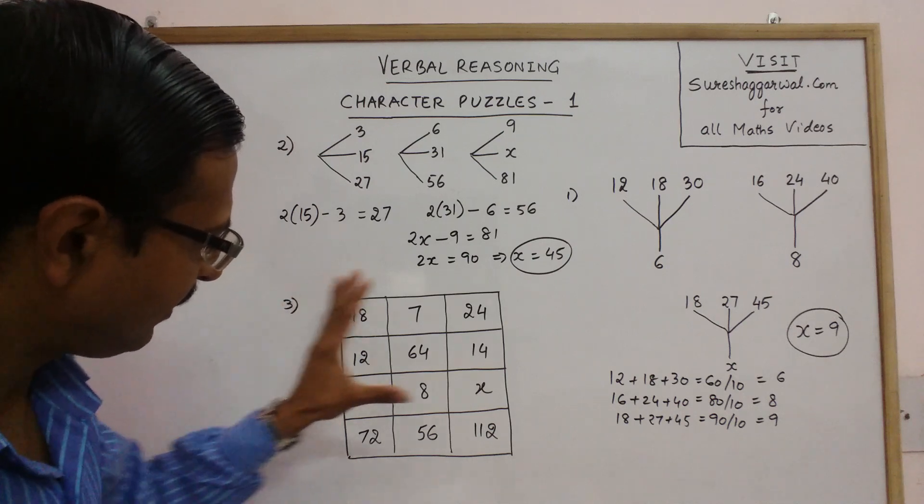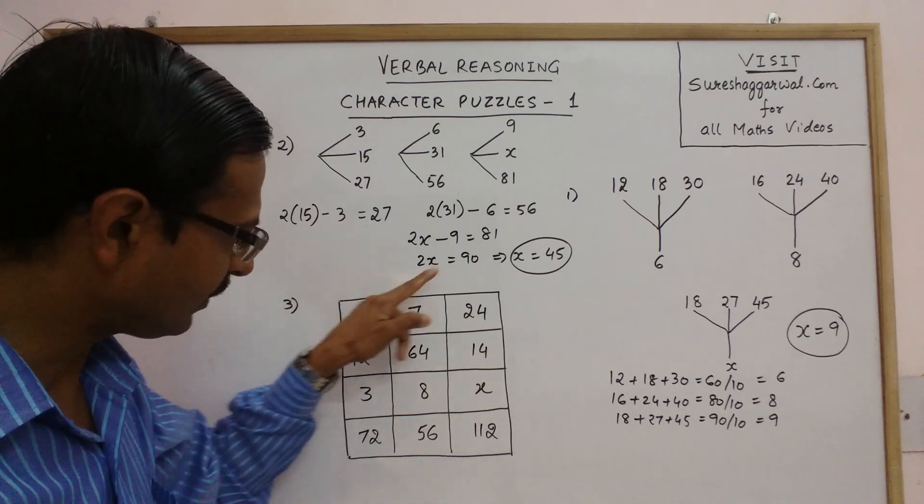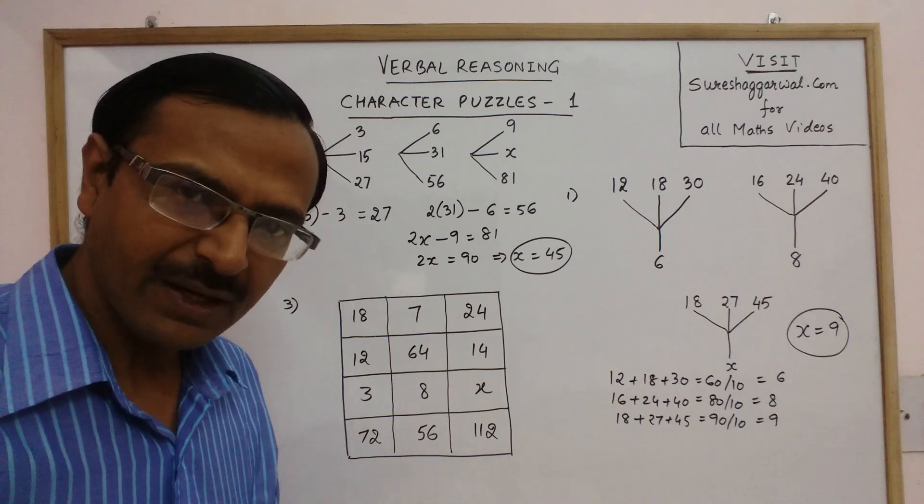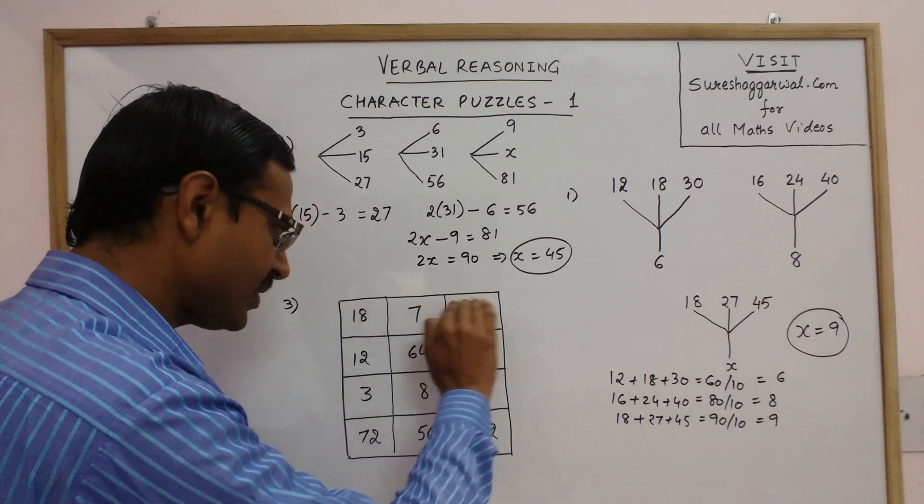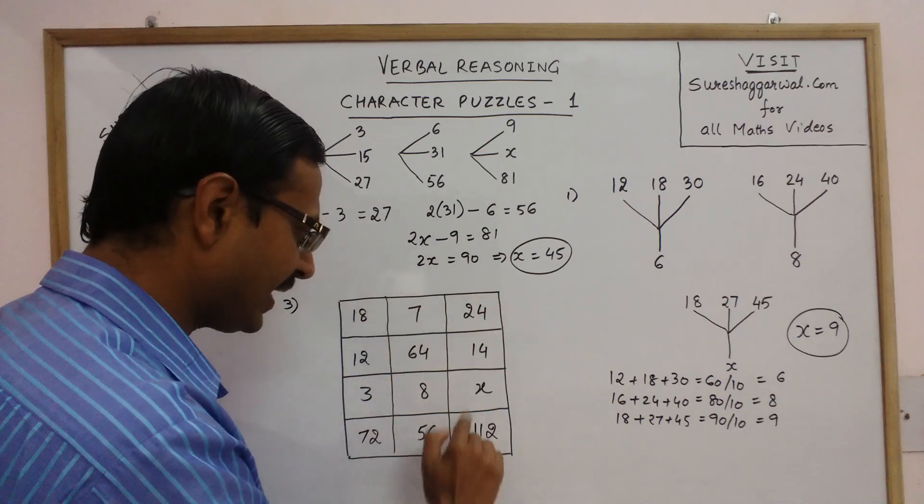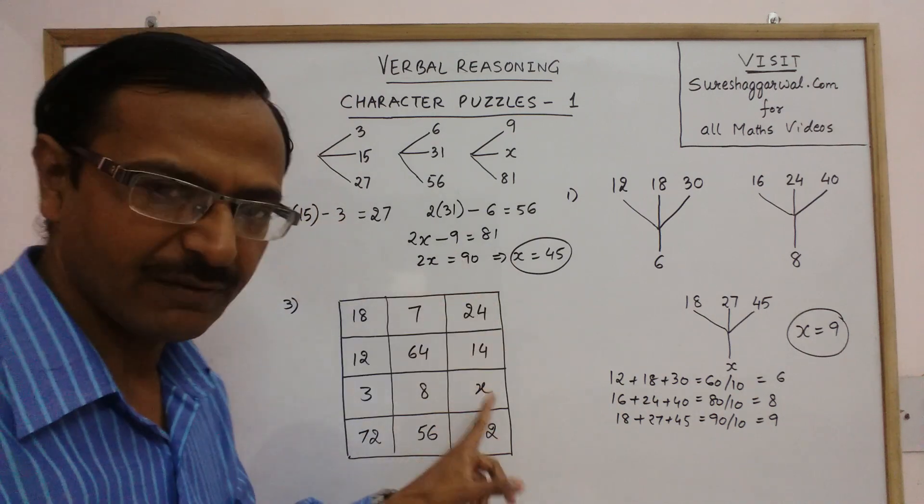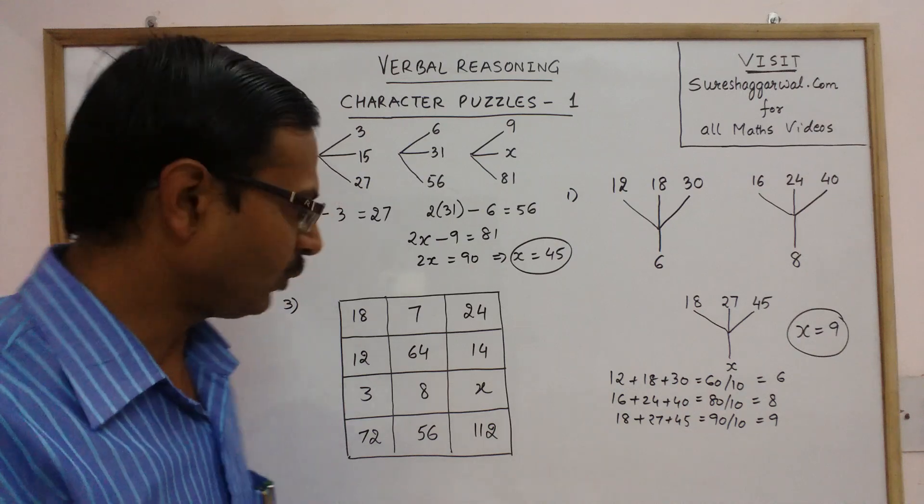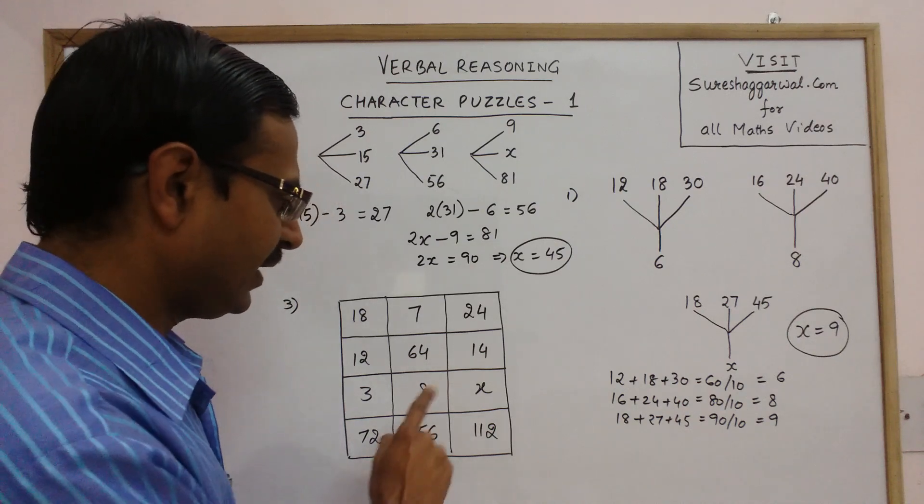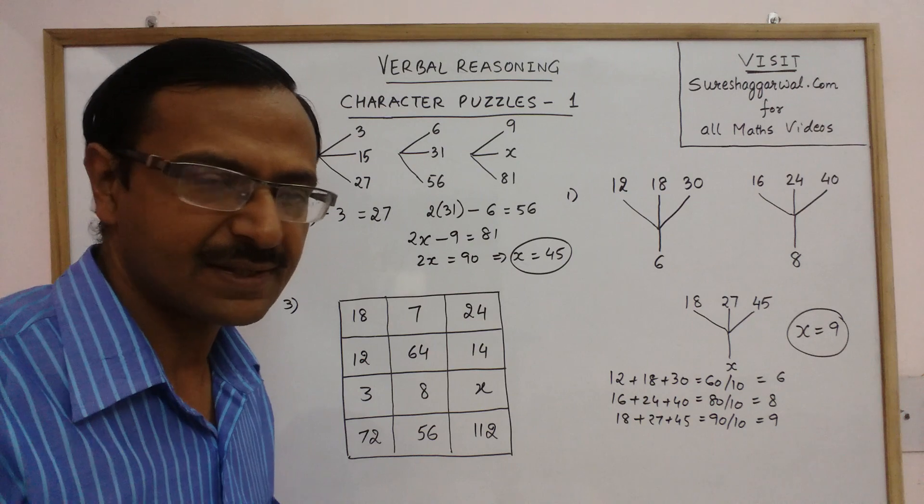This is a matrix in which there are 4 rows and 3 columns. There may be a relationship between these 3 numbers so that you can find x, or there may be a relationship between these 4 numbers in the column so that you can get the value of x. In any way, in both ways, you have to try it and find the value of x.